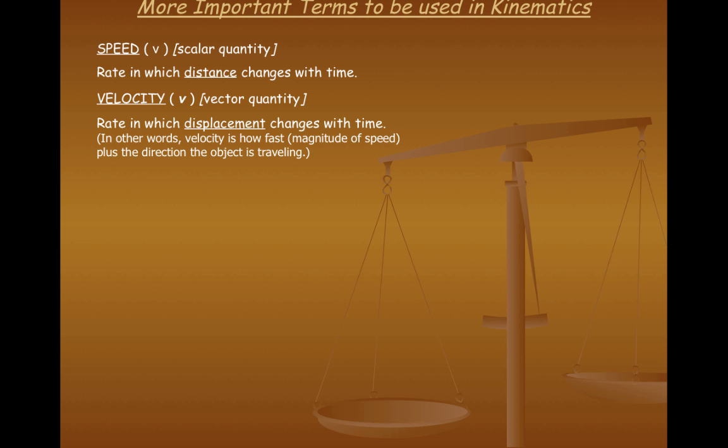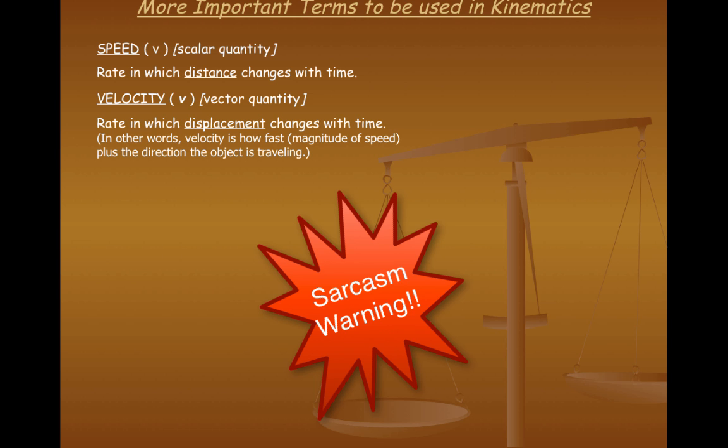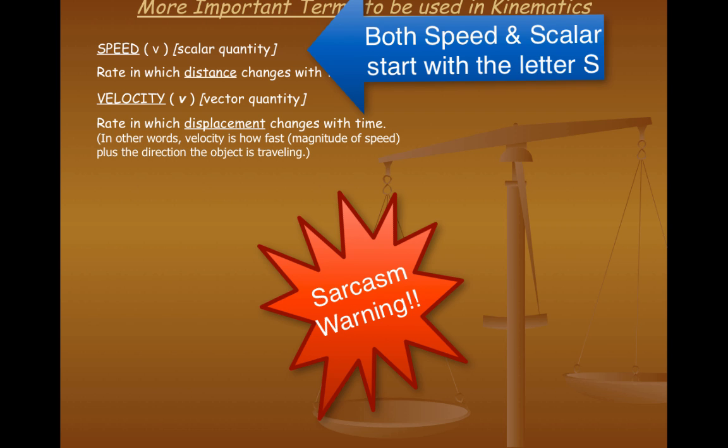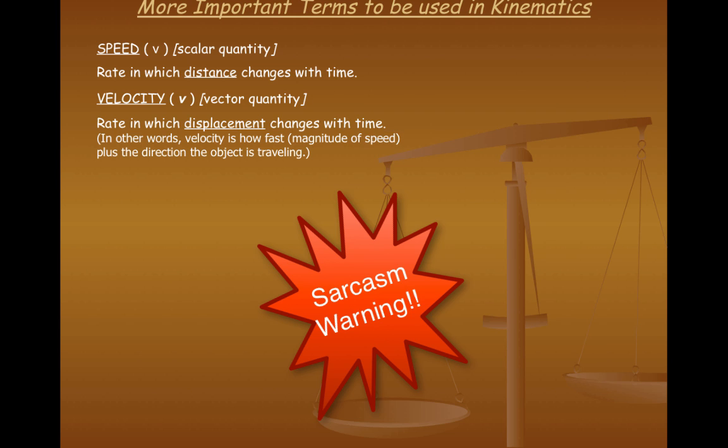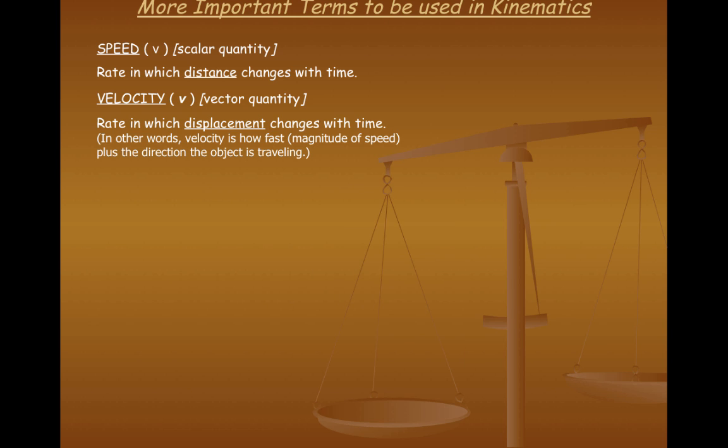So the difference between speed and velocity. One is scalar, one is vector. And I'm not really sure how you're going to remember that speed is scalar and velocity is vector. That's going to be a tough one for you to remember. I'm sorry. You do have to remember, however, that both speed and velocity are measured in units of meters per second. We don't use miles per hour. In science and in physics we use the units for speed and velocity as the meter per second.